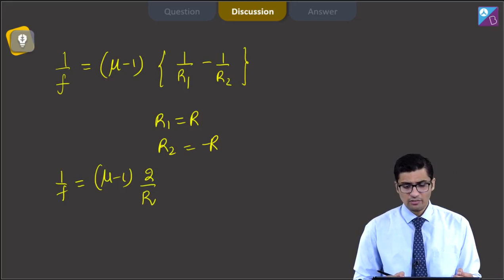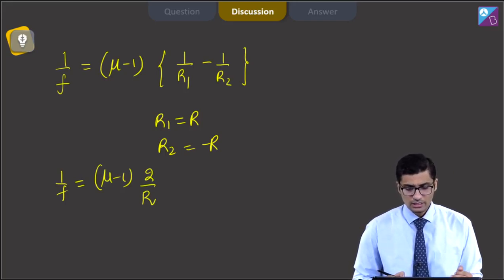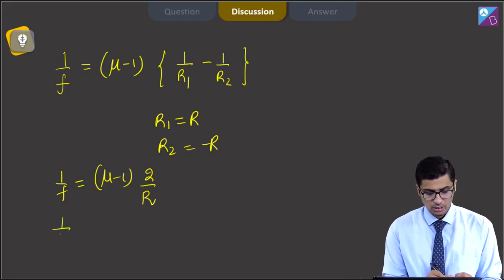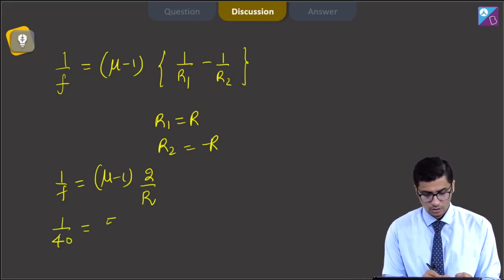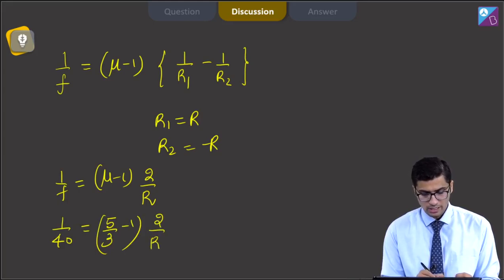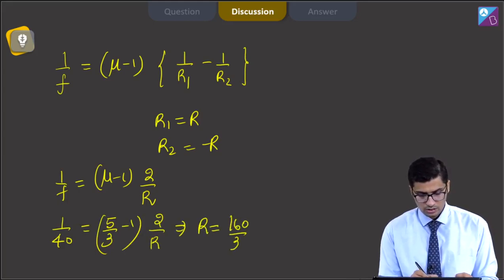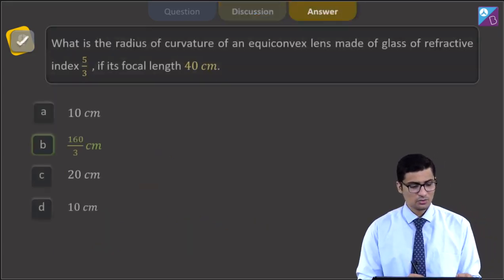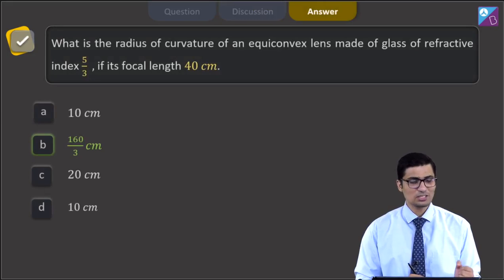In this case, the refractive index is given as 5 by 3 and the focal length is given as 40 cm. So, this will be 1 by 40 is equal to 5 by 3 minus 1 into 2 by R giving us a value of R to be equal to 160 by 3 cm. And hence for this question, the correct answer is B that is 160 by 3 cm.